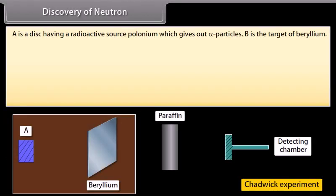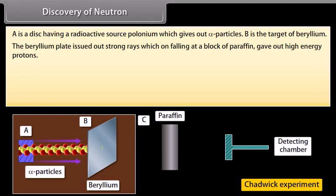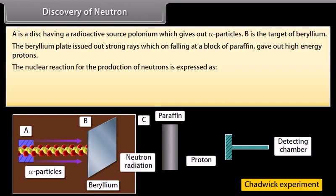Discovery of neutron: A is a disk having a radioactive source polonium which gives out alpha particles. B is the target of beryllium. Both A and B are placed in an evacuated chamber C. The beryllium plate issued strong rays which, on falling at a block of paraffin, gave out high energy protons. The nuclear reaction for the production of neutrons is expressed as a formula.